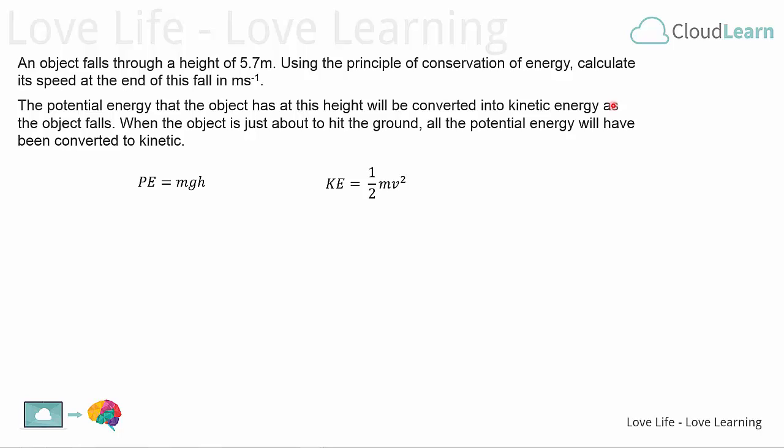The problem here is we don't actually have the mass. However, what we can do is make the two things equal to each other. If this potential energy here is equal to that kinetic energy there at the end, so the potential energy it has at the start,